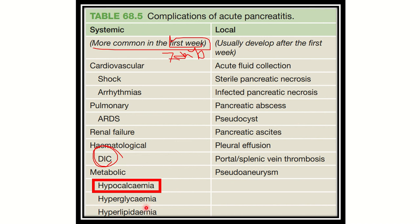In the metabolic category, there may be hypocalcemia, hyperglycemia, and hyperlipidemia. These three points are very important for our question. Local complications include acute fluid collection around the pancreas, sterile or infected pancreatic necrosis, pancreatic abscess, pancreatic pseudocyst, pancreatic ascites, pleural effusion, portal or splenic vein thrombosis, and pseudoaneurysm.